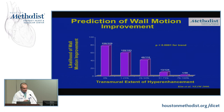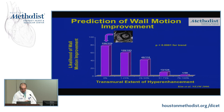In this New England Journal publication, when segments were classified by the amount of enhancement prior to revascularization, there was a clear inverse relationship: segments with no hyper-enhancement had more than 80% likelihood of improvement; those with more than 75% hyper-enhancement had essentially zero likelihood; and intermediate grades showed intermediate probability — a graded inverse relationship.